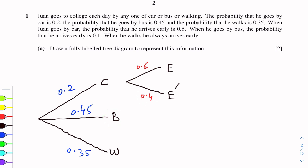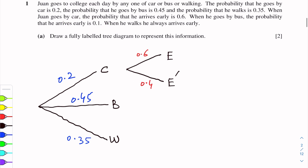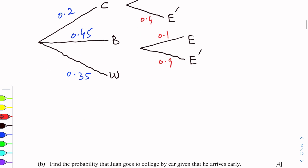For bus, the probability of going by bus is 0.45. When he goes by bus, the probability that he arrives early is 0.1. So we draw two branches for bus: early and not early. Early probability for bus is 0.1, and not early probability is 0.9.